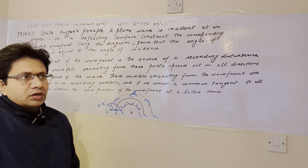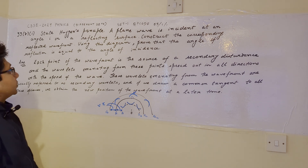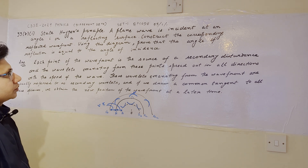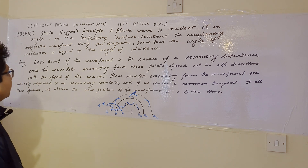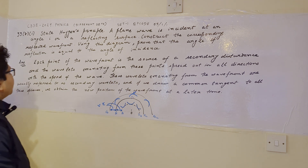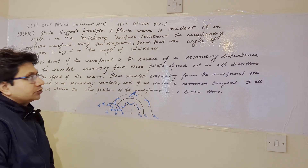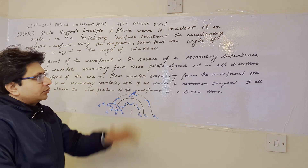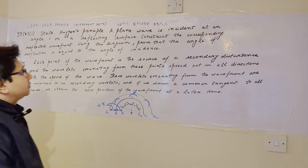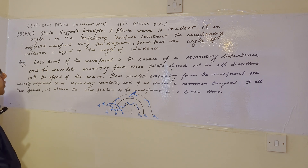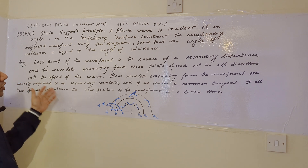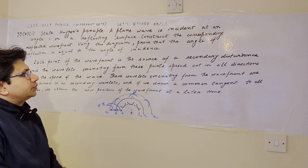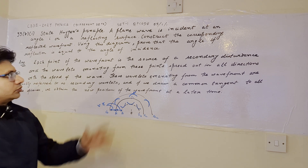Hello students. The question is: state Huygens' principle. A plane wave is incident at an angle i on a reflecting surface. Construct the corresponding reflected wavefront using the diagram and prove that the angle of reflection is equal to the angle of incidence. This problem is based on Huygens' principle — first we answer the statement of Huygens' principle, then we show that the angle of reflection equals the angle of incidence using the wave theory.